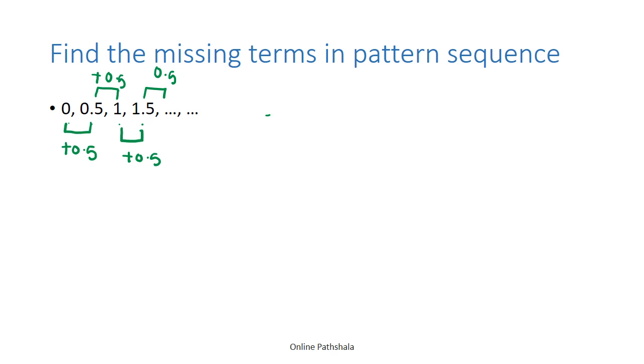1.5 plus 0.5 will give us 2, so the next term will become 2, and 2 plus 0.5 will give us 2.5. So the next term after 2 will be 2.5.